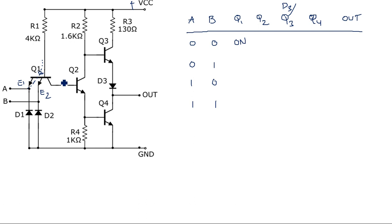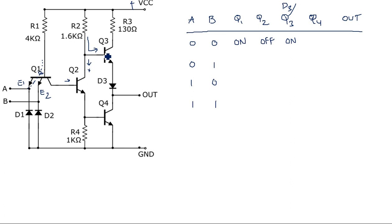Since Q1 is on, Q2 does not receive any base current and comes into the off state. As Q2 is off, no current flows toward Q4's base. However, from VCC through R2, current flows directly to the base of Q3. So Q3 comes into the on state, D3 also turns on, and Q4 remains off. As Q3 is on and Q4 is off, current flows at the output, so output is equal to logic 1.